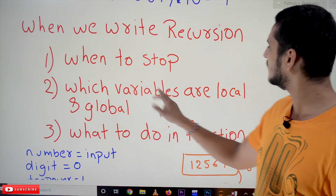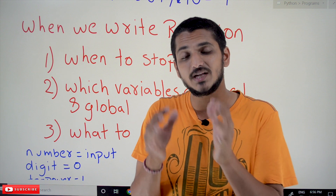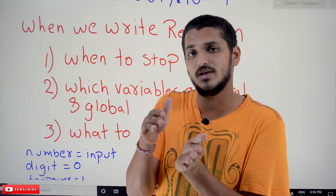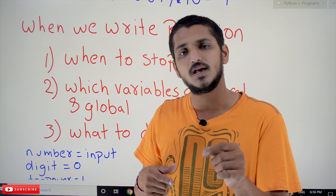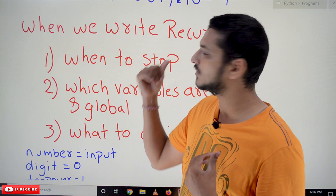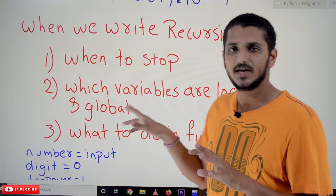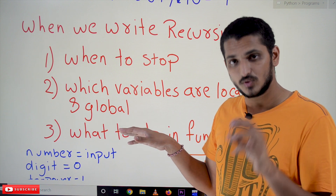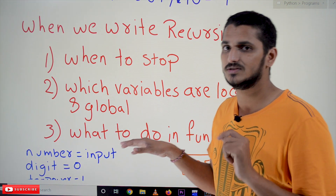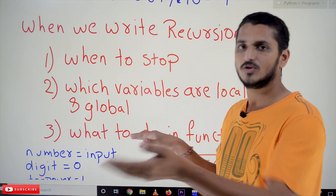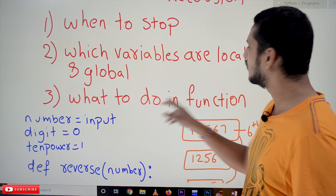The next point to identify is which variables are local and which are global. Local variables are variables that belong to that function. Global variables are variables that any function can use. We have to identify how many variables are needed for this program and which are local versus global. If you don't have any idea about local and global, please watch our previous classes first.